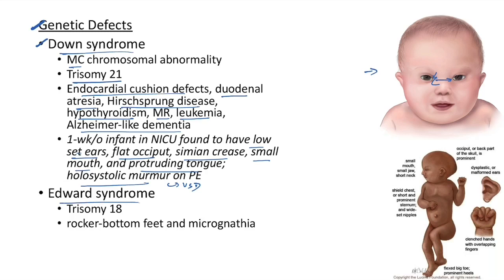Edward syndrome is due to trisomy 18. There will be rocker-bottom feet and micrognathia (small jaw). This picture shows small jaw, shield chest, prominent occiput, malformed ears, clenched hands, flexed big toe, and prominent heels.